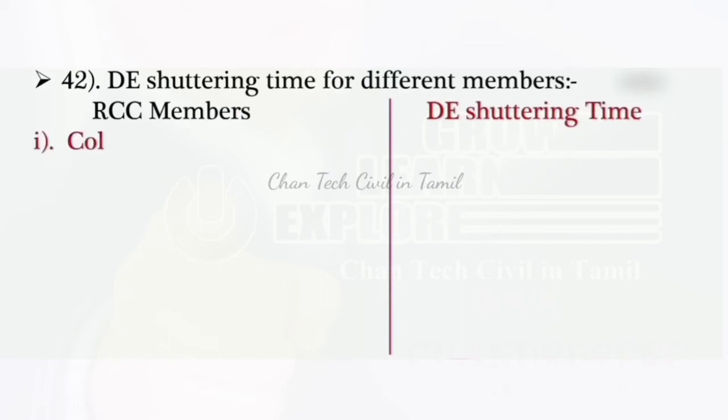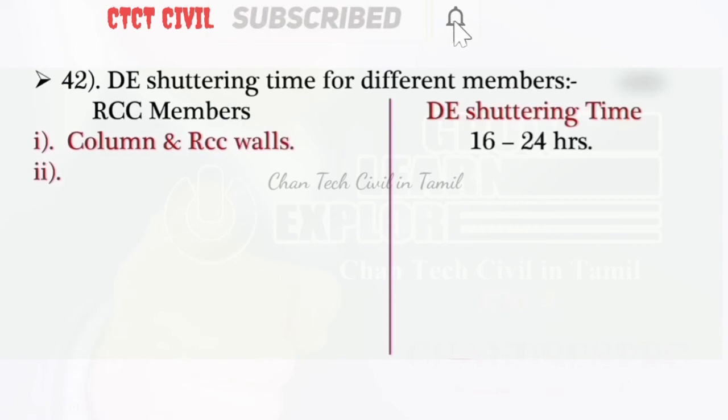De-shuttering time for different members. RCC members: column and RCC walls 16 to 24 hours.